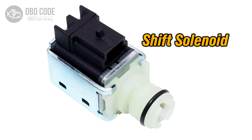The P0750 trouble code indicates a malfunction in shift solenoid A within the transmission. Shift solenoids are responsible for controlling the flow of transmission fluid to engage or disengage specific gears, allowing the transmission to shift smoothly between gears. Solenoid A is typically responsible for controlling the operation of the first or main gear.